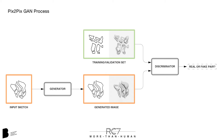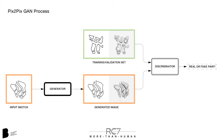The sketch tool will be powered by a PIX2PIX Generative Adversarial Network, or GAN, which can be trained to perform image-to-image translations. By creating a dataset of corresponding images, a GAN can be trained to generate new design proposals based on a sketch.